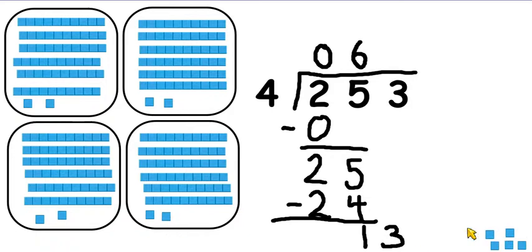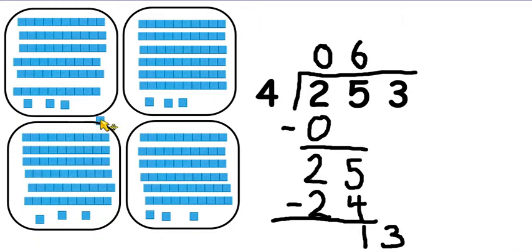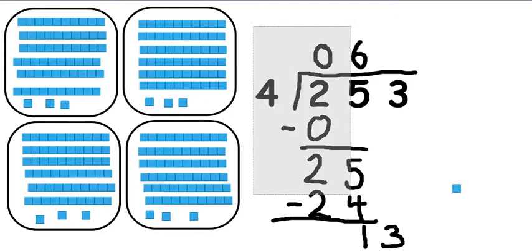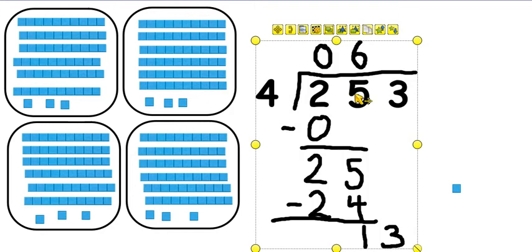And I can see I've got 5 left. So remembering there has to be the same amount in each group, I can't do that — I have to leave this one spare. I have to leave it as a remainder.